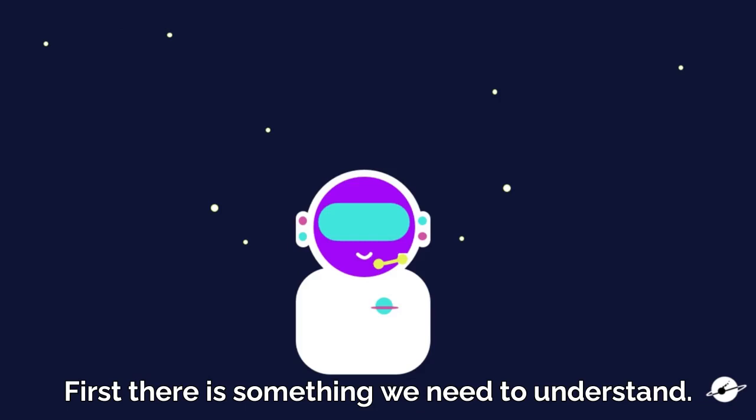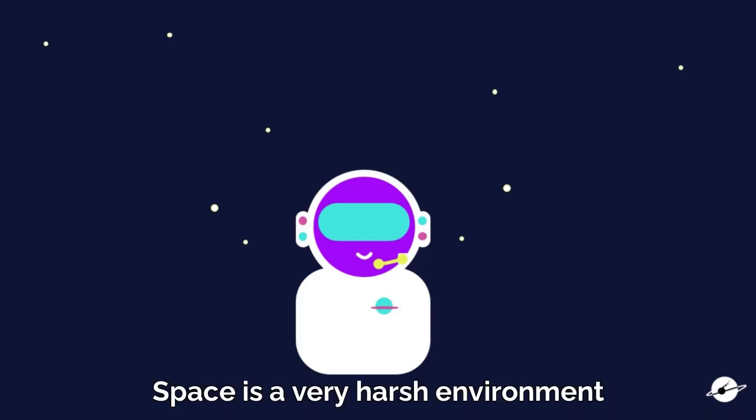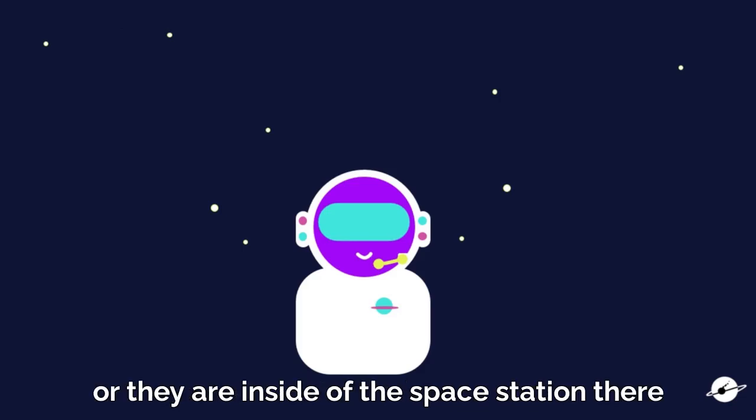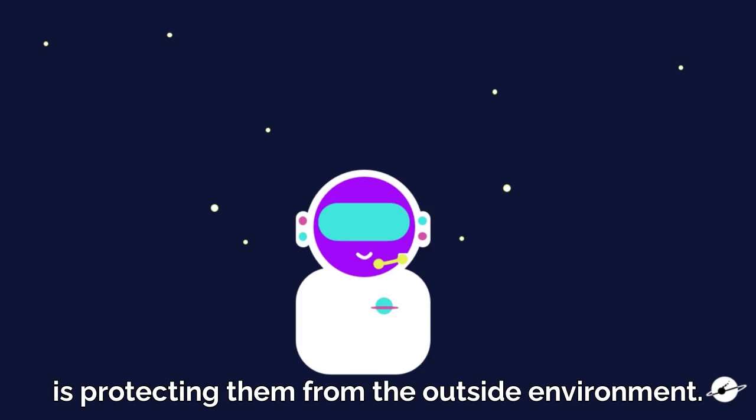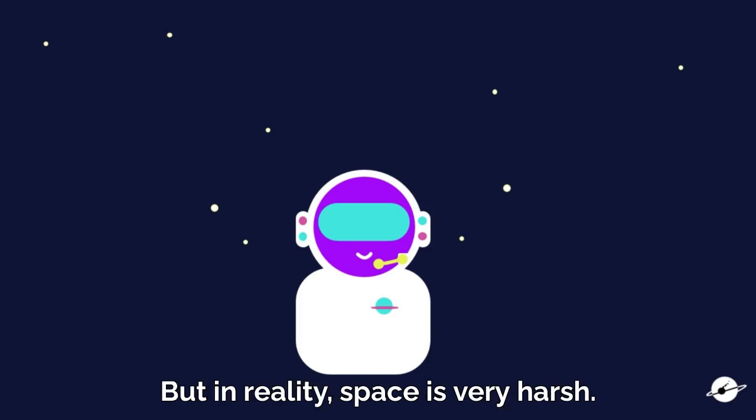First, there's something we need to understand. Space is a very harsh environment. Astronauts survive in space because they have spacesuits, or they are inside of the space station that is protecting them from the outside environment.